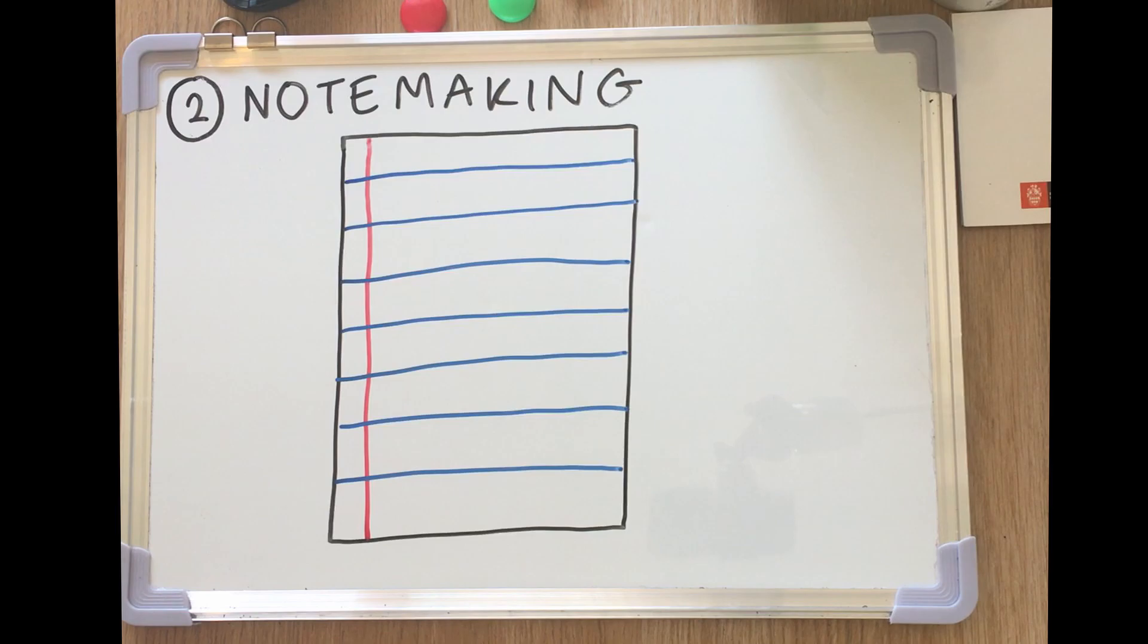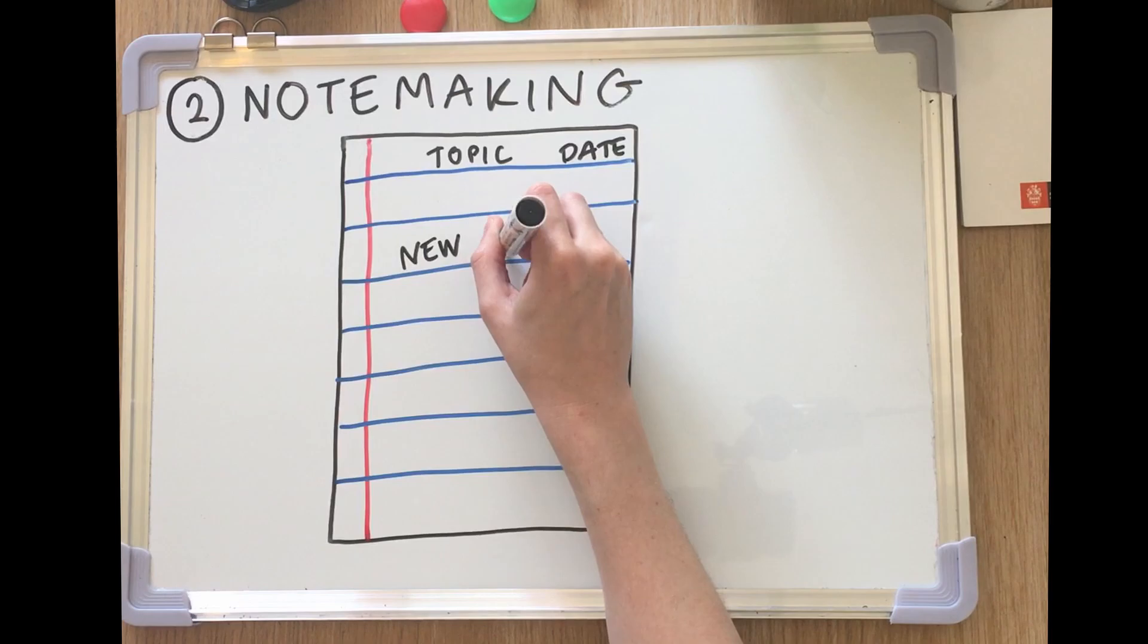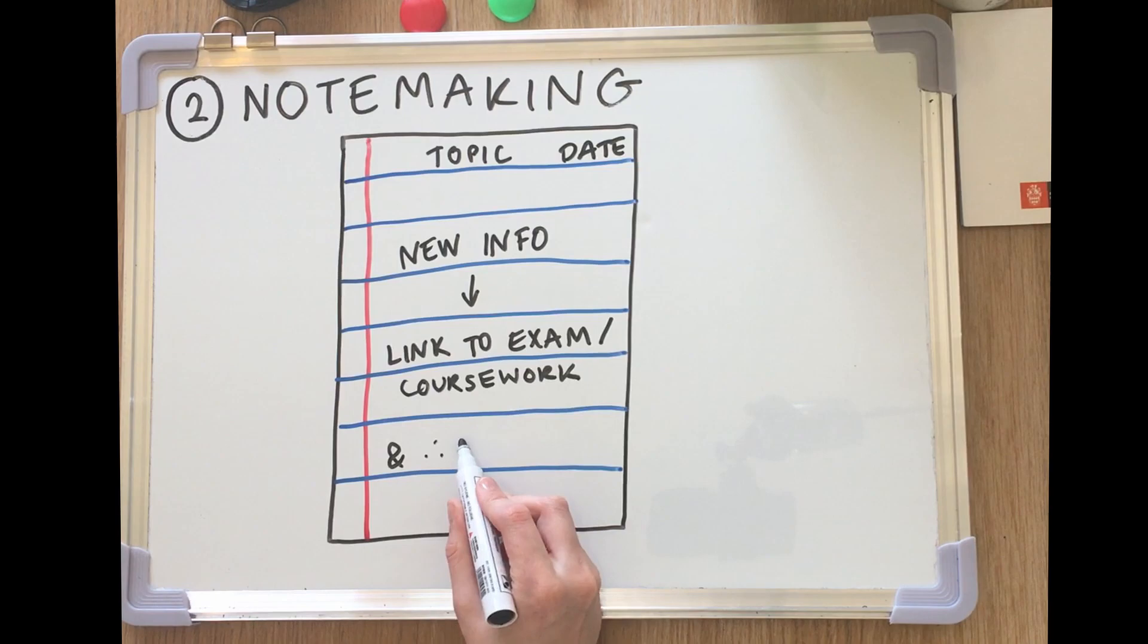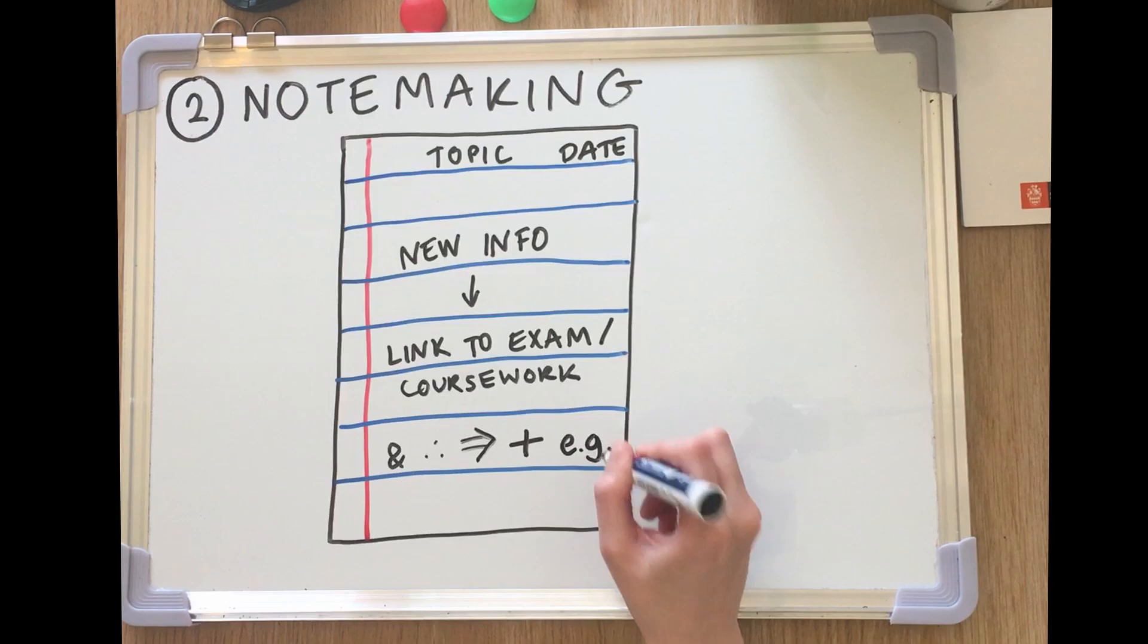However you take them, make sure they're organized. Record the topic and the date that the notes relate to and only record new information. It's a good idea to link all of your notes to exam questions or coursework that they might relate to so they're easy to find later on. And remember to use shorthand and symbols to make your note-taking quicker and easier.